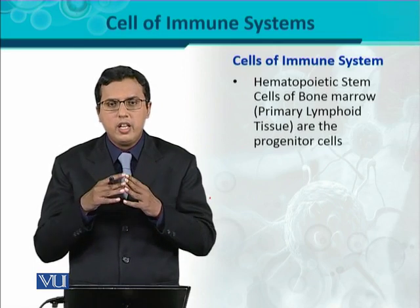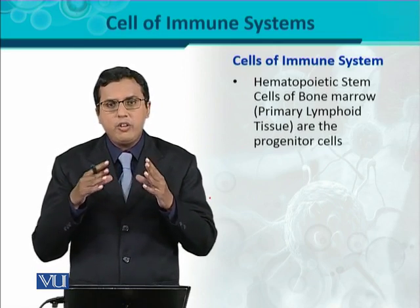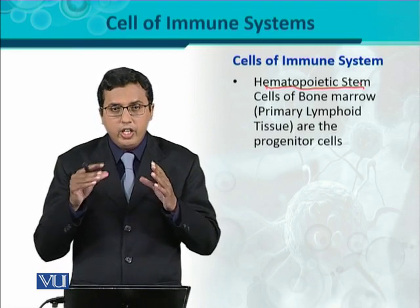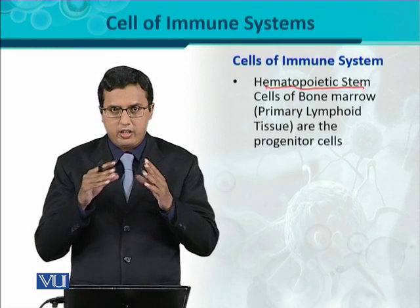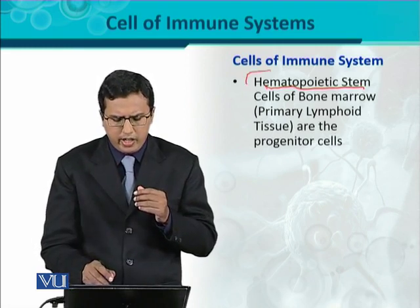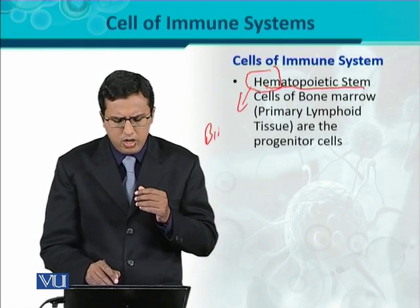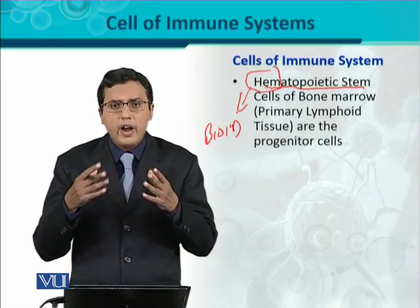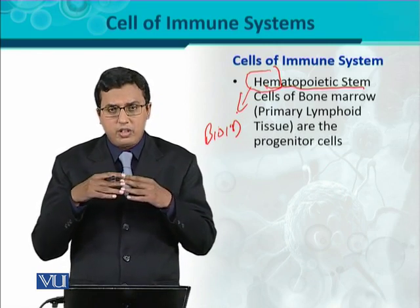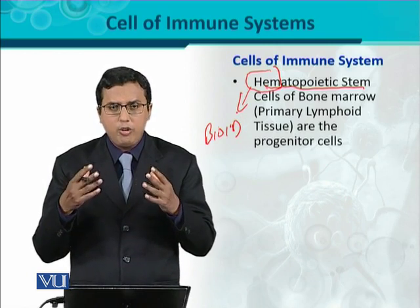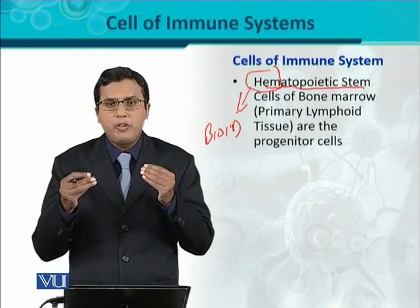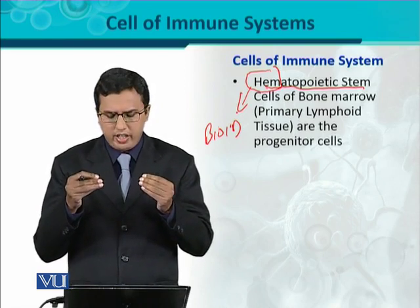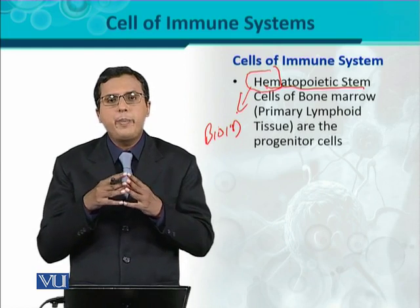Those generative lymphoid tissues contain stem cells, and those stem cells are basically parent cells — progenitor cells. In case of immune cells, there is a very important role of hematopoietic stem cells. The word hematopoietic — hemo means blood, so hematopoietic stem cells are those stem cells which are the source for cells of the blood. Hematopoietic means they have enough potential to produce the cells of blood.